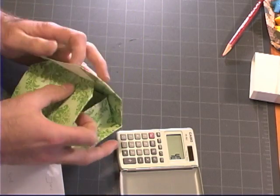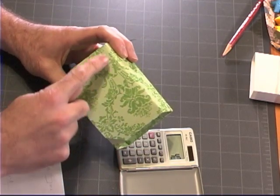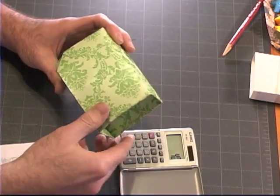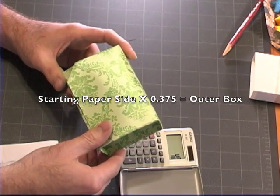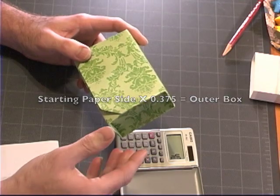Now, the other dimensions that will be of interest is this length here of the box, which is 0.375 times the length of your starting square.